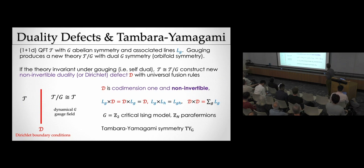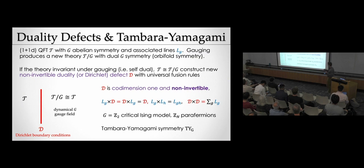We could gauge this G symmetry, which produces a new theory — the orbifold or gauged theory. This theory interestingly also has a dual G symmetry. This is an interesting feature of gauging finite abelian symmetries: you don't really destroy the symmetry; it pops out in a new form. Even though we gauged G, there will be twisted sectors that have the G symmetry again. In general we can make two different theories this way, but let's focus on the special circumstance of being self-dual, where the theory is equivalent to its gauged version.